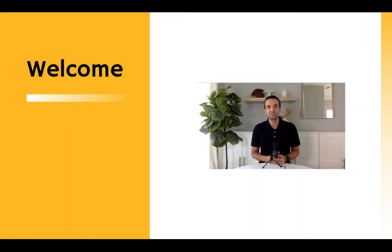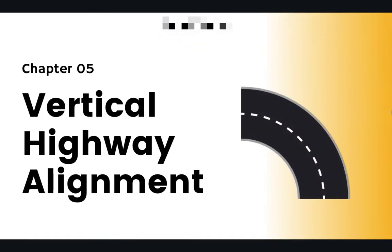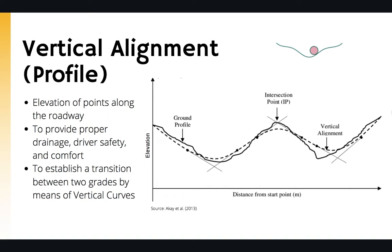This is chapter 5 of this online course. In this chapter we will be talking about different design elements for vertical highway alignment. When we talk about the vertical alignment or profile, we are showing the elevations of different points along the roadway. This is for providing proper drainage, driver comfort, and also increased safety for our designed highway.